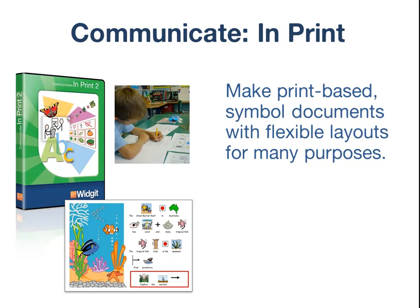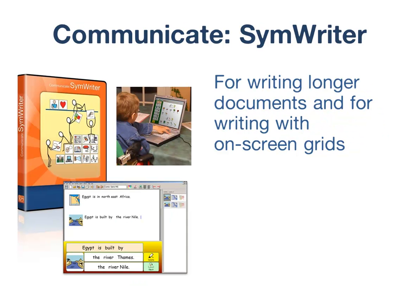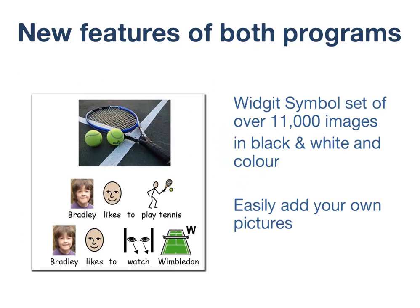One program allows very flexible layouts so that you could do a lot more than just printing out basic grids, and it is called Communicate in Print. Its companion program, Communicate SimWriter, is designed for writing more straightforward documents and for writing with on-screen grids. Both programs come with a much larger widget symbol set of over 11,000 images, both in colour and as black and white line drawings, linked to a vocabulary of over 40,000 words.